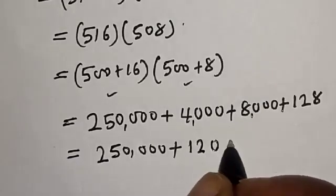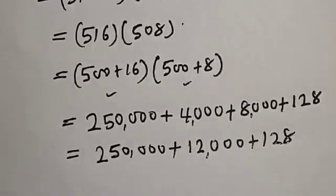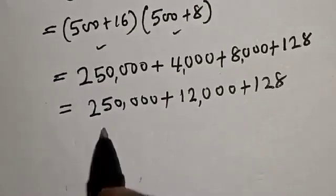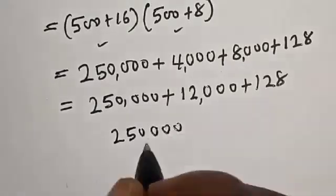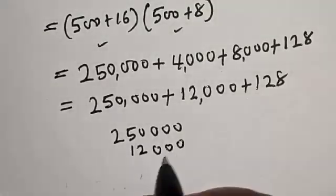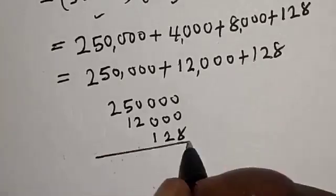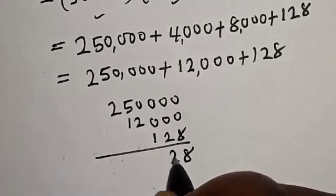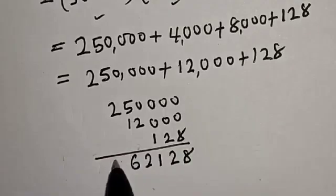Now let's add everything together. We have 250,000 plus 12,000 plus 128. Adding these, we have 8, then 2, then 1, then 2, then 6, and 2.